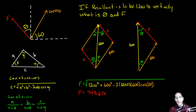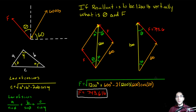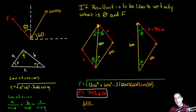Now, what angle do we need to apply F? Now that we know F equals 743.6, we can use the law of sines because we know this side and its opposite angle, and we know the other side so we can solve for its opposite angle. The law of sines gives us 600 over sine of theta equals 743.6 over sine of 30.